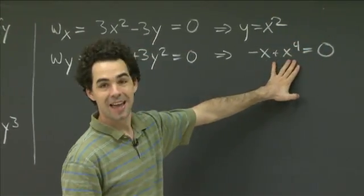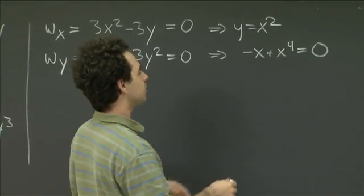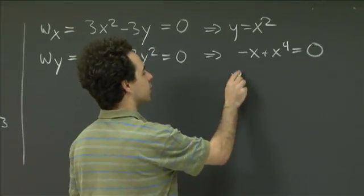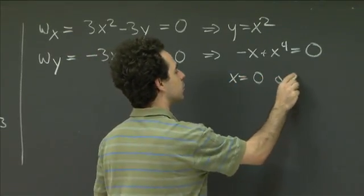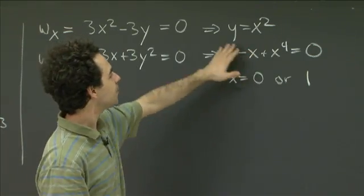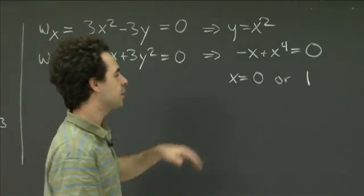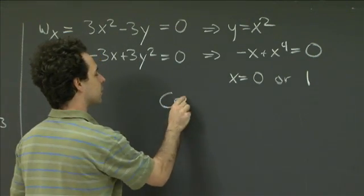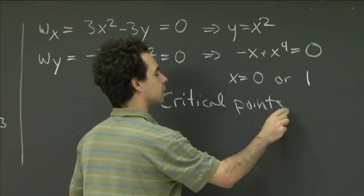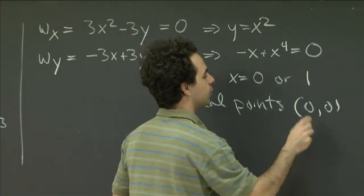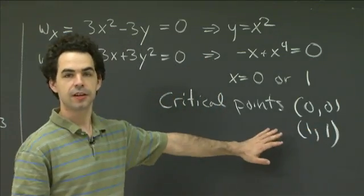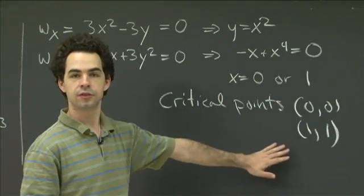So we could have x equal to 0, or dividing out, we get x cubed equals 1, which has solution x equals 1. So x equals 0 or 1 are the only solutions. The corresponding y values: since y equals x squared, this gives us critical points at (0, 0) and at (1, 1). So this function has two critical points: (0, 0) and (1, 1).